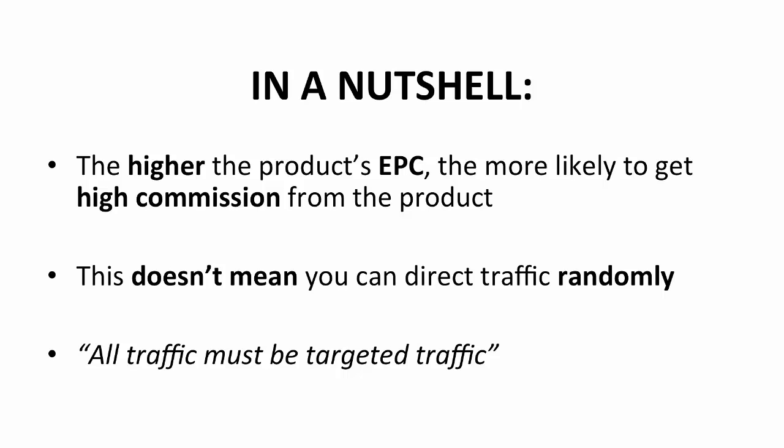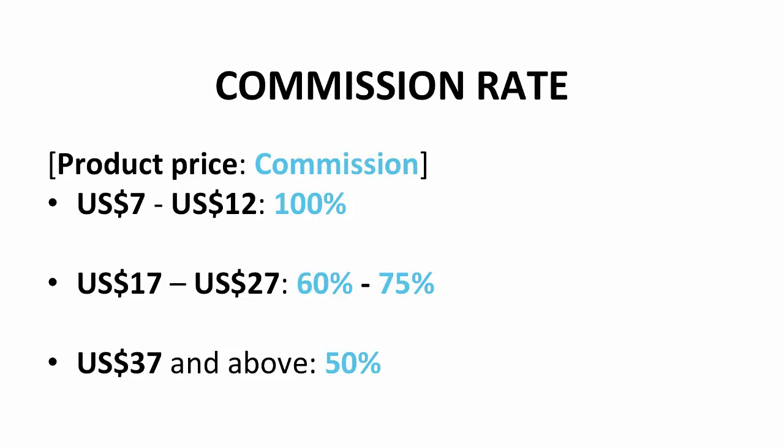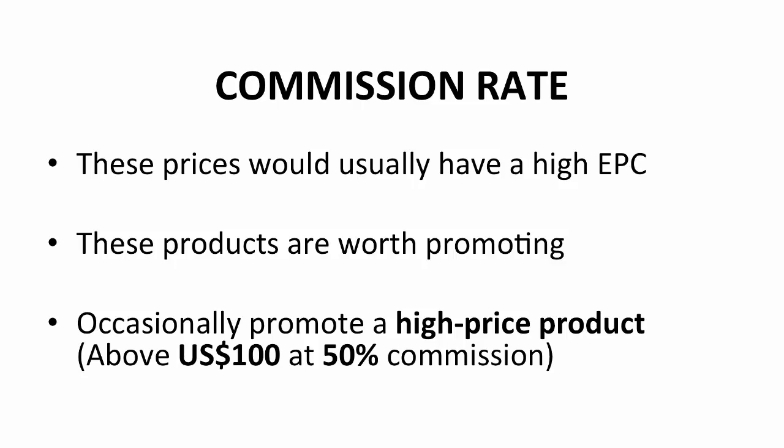However, though it sounds like a great idea to make as much sales as possible, it's not wise to direct traffic randomly. You need to know who is the product's target market, and who is in the niche. This is the basic rule of marketing that applies in all business. Remember, all traffic must be targeted traffic. The standard commissions are 100% for products that cost between $7 to $12, 60 to 75% for products that cost $17 to $27, and 50% for products that cost $37 and above. The prices I've mentioned would usually have a high EPC, meaning these products are worth promoting.